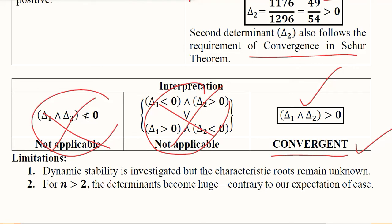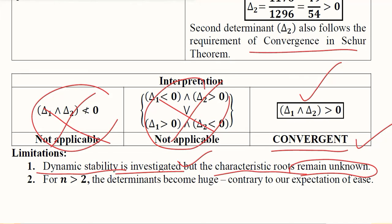We conclude this topic of Schur's theorem by explaining two limitations. The first limitation is about dynamic stability: it gets investigated, however, the characteristic roots remain unknown because we do not have information about the characteristic roots as we have not calculated them. This much ignorance will remain in applying Schur's theorem.